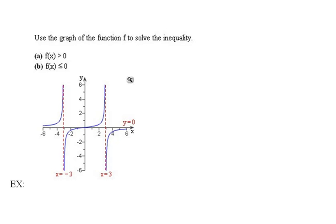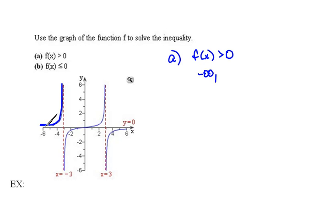Here we have a problem that says: use the graph of the function f to solve the inequality. Part A asks us to find where f of x is greater than 0. Since f of x is just a fancy way of saying y, we're asking where the y values are positive. Looking at the graph, we have positive y values starting at negative infinity and going all the way to x equals negative 3. We don't include negative 3 because it's an asymptote — the graph is just getting close to it.